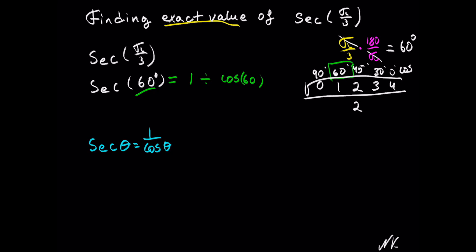And on the reference table, cosine of 60 degrees is on top of 1. So cosine of 60 degrees is equal to 1 half.